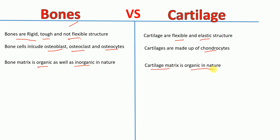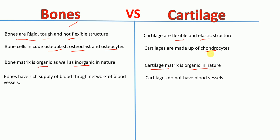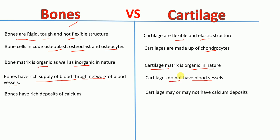Bones have a rich supply of blood through a network of blood vessels, whereas cartilage does not have blood vessels. Bones have rich deposits of calcium, whereas cartilage may or may not have calcium deposits.